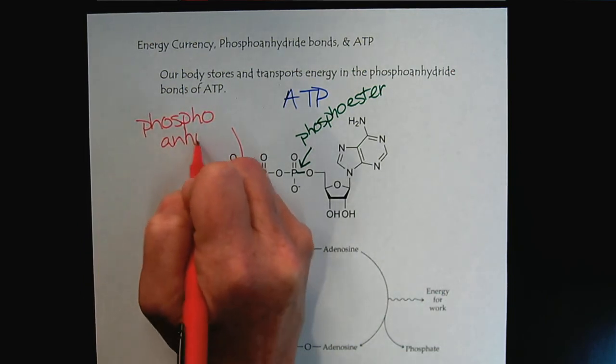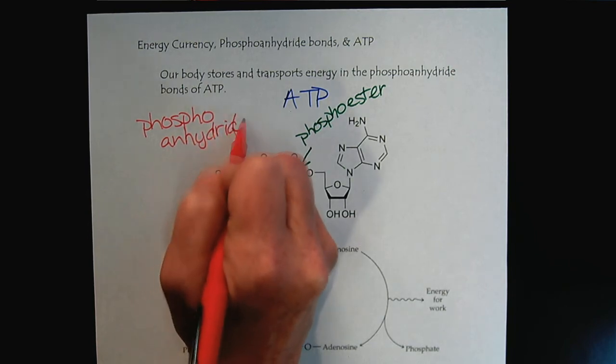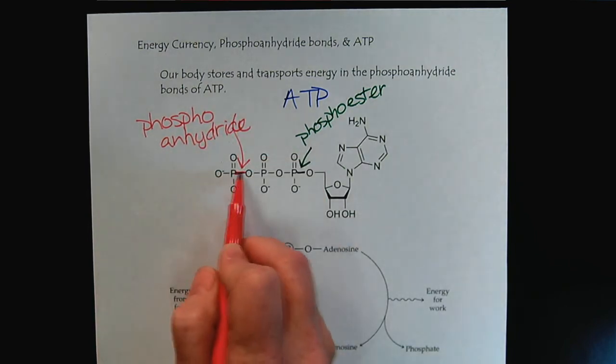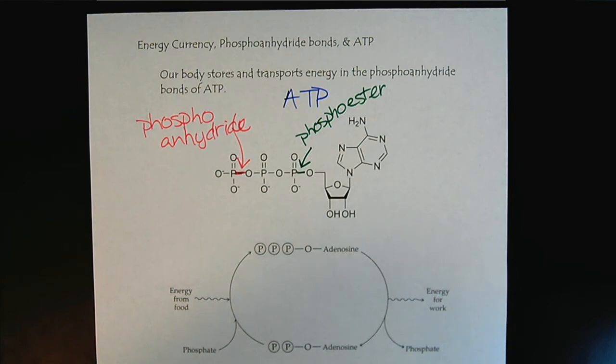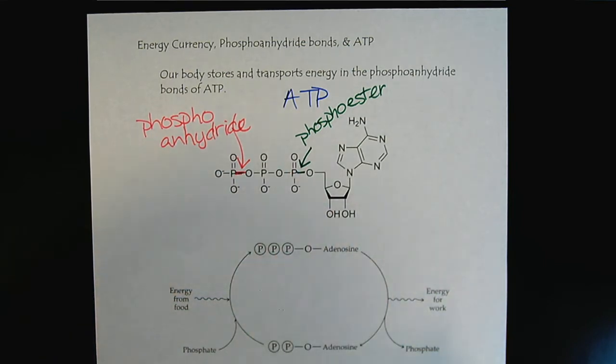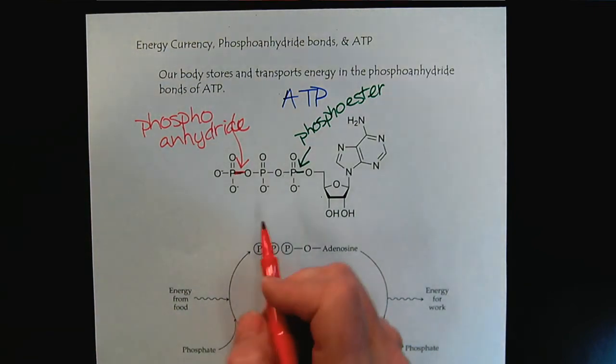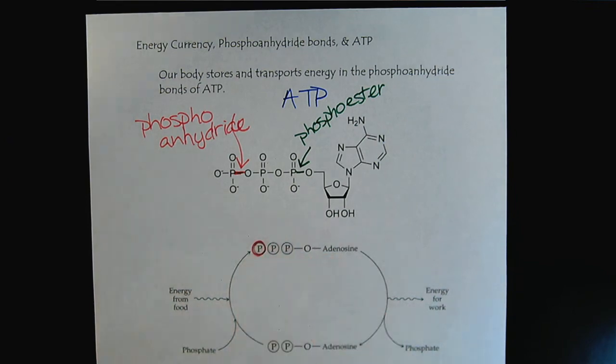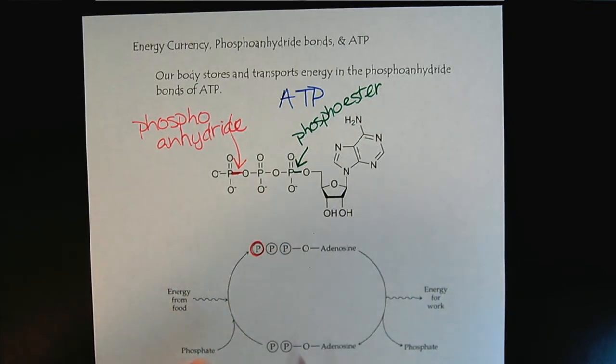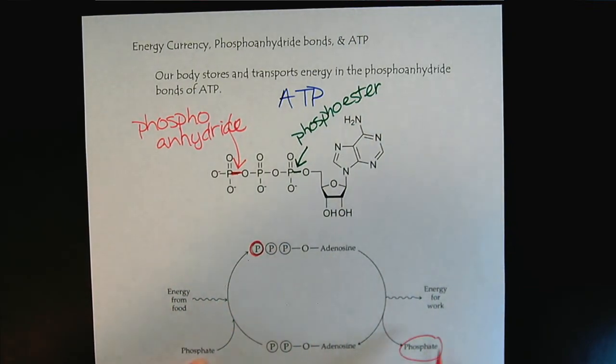So phosphoanhydride. So this is the bond that's continually made and reformed as ATP is converted back and forth from ADP. So through the gain and loss of this phosphate group right here,